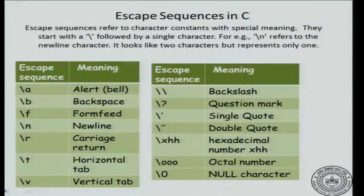Instead of always using backslash x followed by a hex code, C provides certain escape characters — special sequences — for printing non-printable characters. We have already seen one: \n is the newline character, which is non-printable but corresponds to an ASCII character. Similarly, other non-printable characters have escape sequences in C — for example, \a is the bell character, and so on.